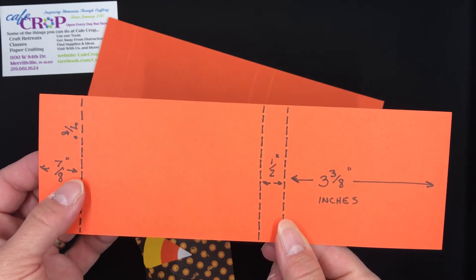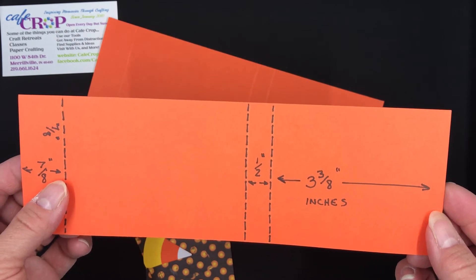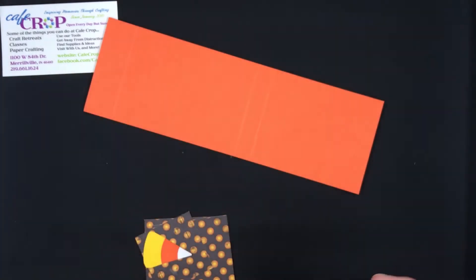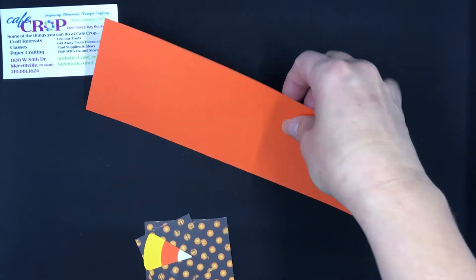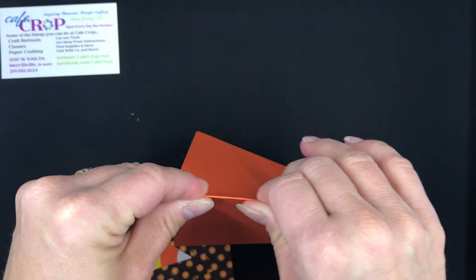Now you could easily make this longer for a bigger piece of candy and adjust your measurements for that, but this works for what we're doing today. So now I'm going to take this piece and we're going to go ahead and fold it on the score line. I've already pre-scored it.